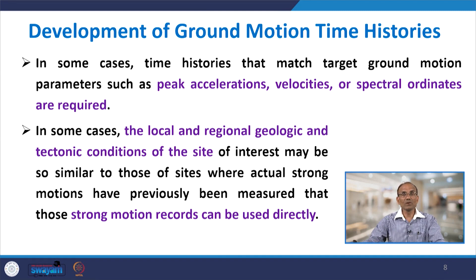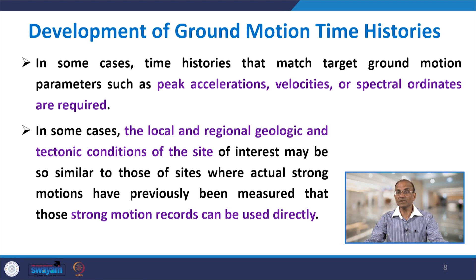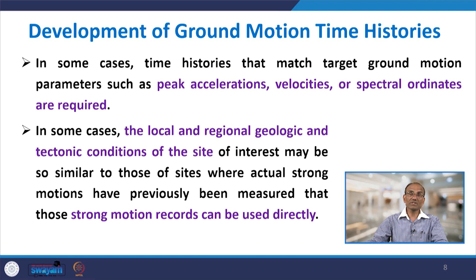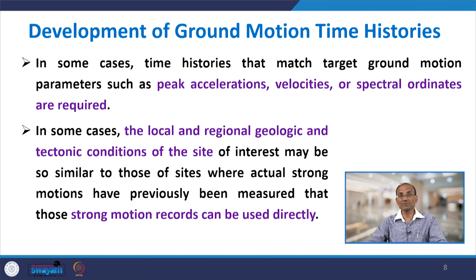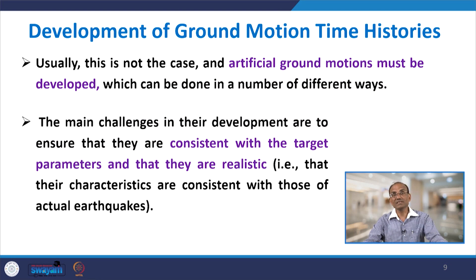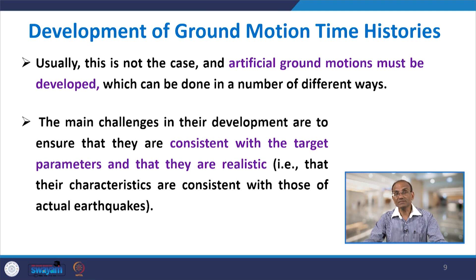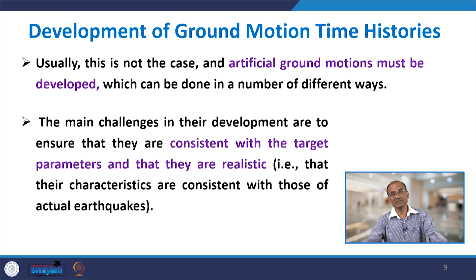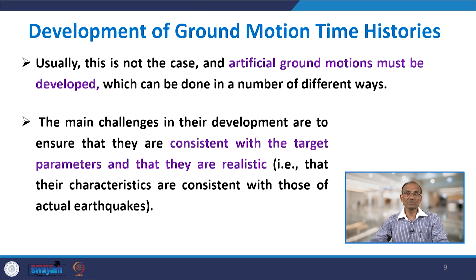In some cases, the local and regional geologic and tectonic conditions of the site of interest may be similar to those of sites where actual strong ground motions have been recorded. In that case, no modification is required and the strong ground motion can be used directly. Usually this is not the case, and artificial ground motions must be developed, which can be done in a number of ways. The main challenges are to ensure that they are consistent with target parameters and that the motions are realistic — meaning their characteristics are consistent with those of actual earthquakes.